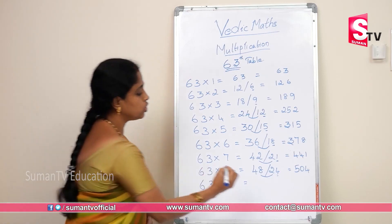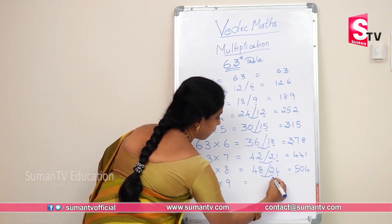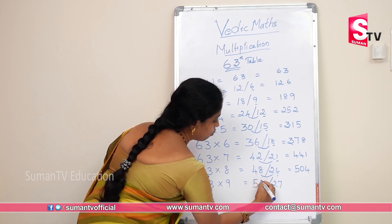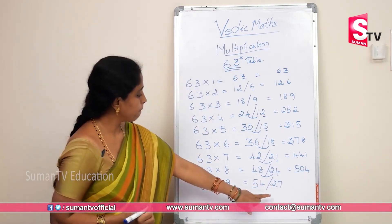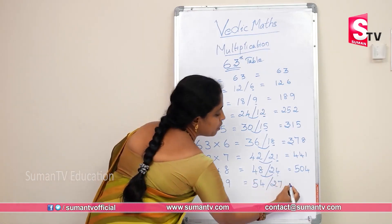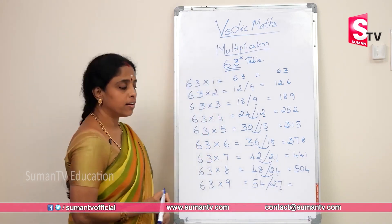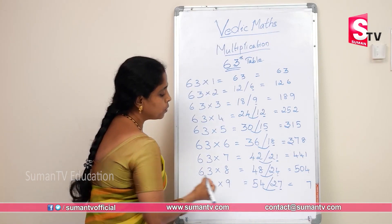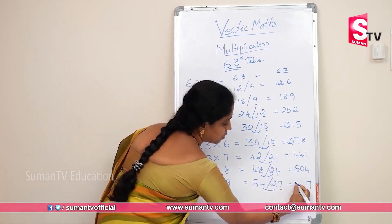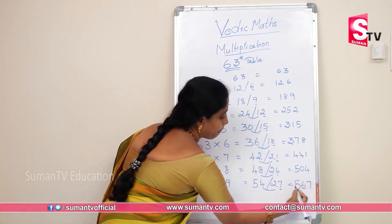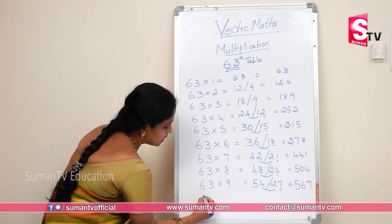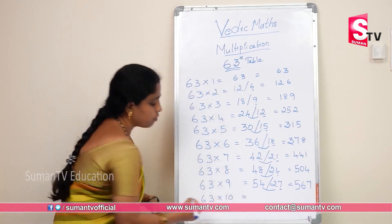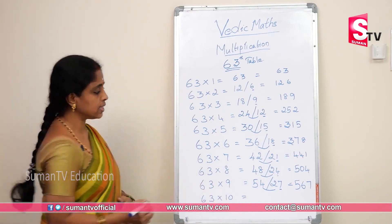63×9: 9×3 is 27, 6×9 is 54 — write 7 in unit place, 54 plus 2 is 56, giving 567. 63×10: we all know 63×10 is 630.